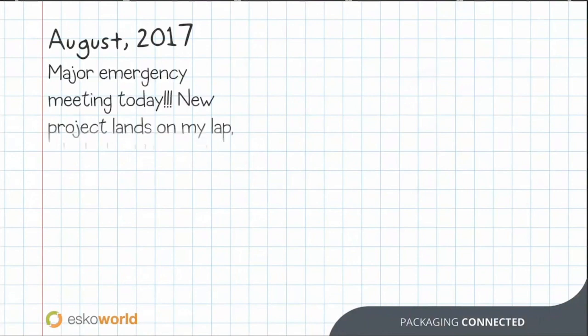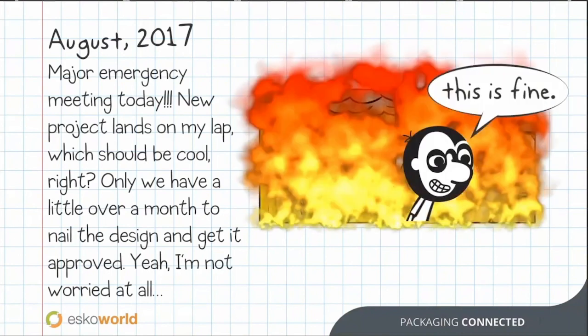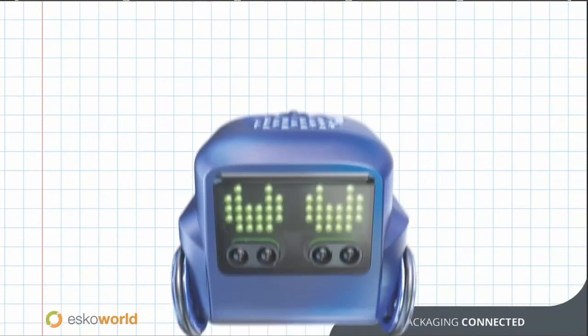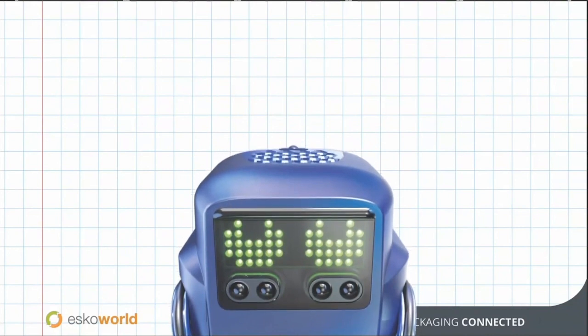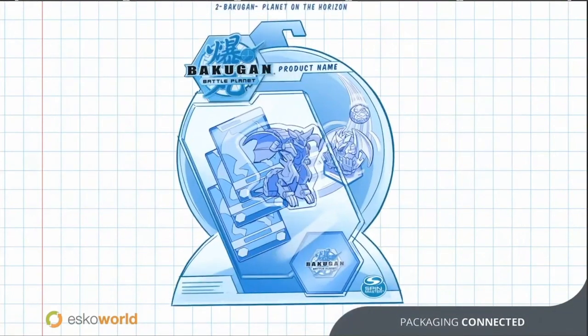August 2017. Major emergency meeting — a new project landed on my lap. I only had a little over a month to nail the design and get it approved. The product was initially named QB, which eventually turned into Boxer — a little robot in a cute cube form factor, super interactive with a huge personality. He got a lot of attention at New York Toy Fair, so the brand team wanted to make sure they pushed this product and capitalized on the moment. It was crunch time.